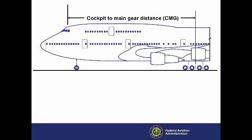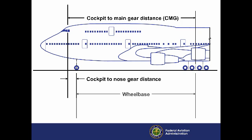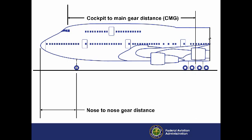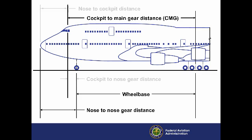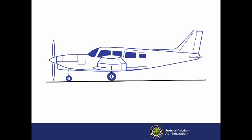Calculate the CMG distance, as shown here on this side-view of the airplane, by adding the cockpit-to-nose-gear distance to the wheelbase. If the Airplane Manufacturer's Manual does not provide the cockpit-to-nose-gear distance, you can also calculate the CMG by adding the airplane's nose-to-nose-gear distance to the wheelbase and then subtracting the airplane's cockpit-to-nose-gear distance. Again, these dimensions may be scattered in various sections of the planning manuals. For airplanes where the nose-gear is forward of the cockpit, use the wheelbase instead of the CMG, as shown in this side-view of a small, single-engine plane.